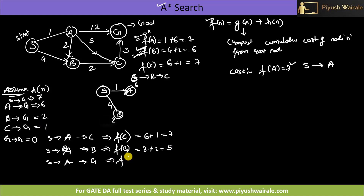Now what about f(G) via S→A→G? f(G) = 1 + 12 = 13, and the heuristic value of the goal state is 0, so f(G) = 13.